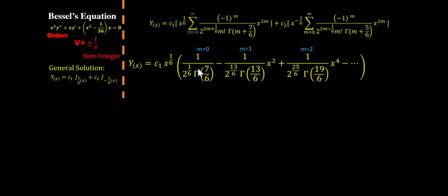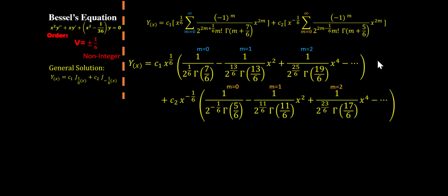From the first sum, when we plug in m = 0 we get this, when we plug in m = 1 we get this, when we plug in m = 2 and so on. Here's what we get for our second sum.